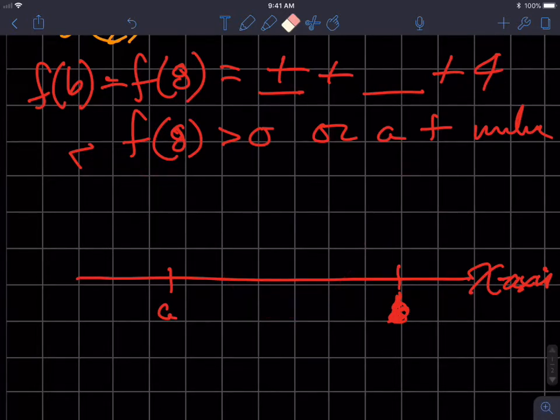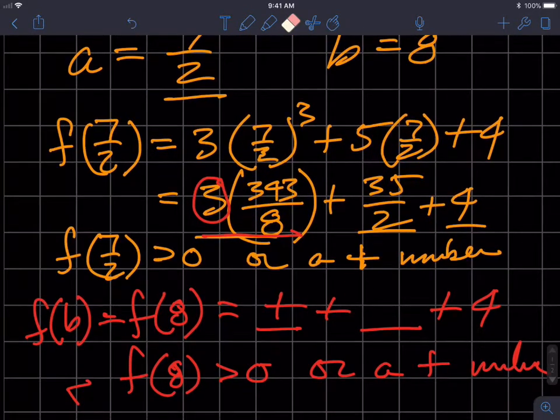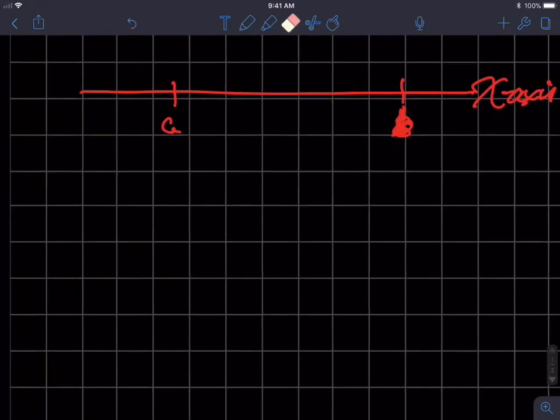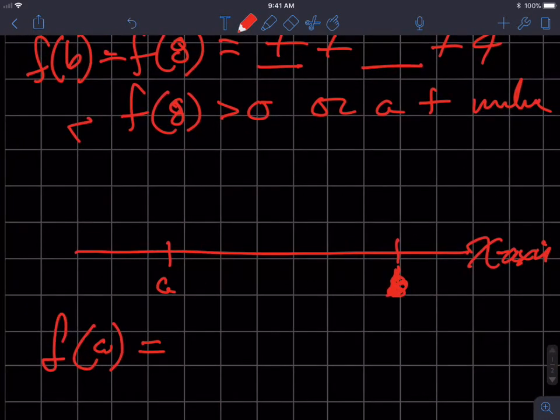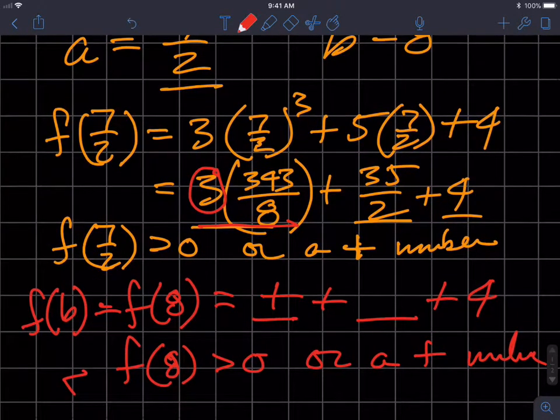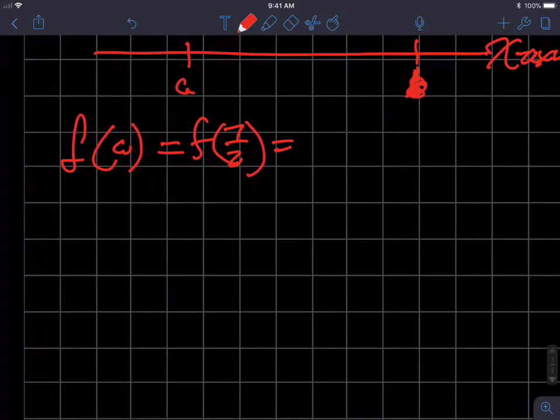But if I get one that's positive and negative, then it in fact does tell me that there's a zero in between those two values. So let's try some different values. Let's stick with f of a since I already figured that out, f of 7 halves, and we get a positive value. So now let's choose a different value. I'm going to choose a to equal negative 3.